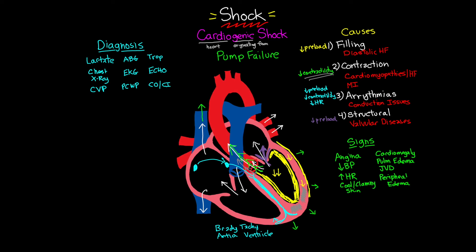Now let's talk about the various treatment modalities for cardiogenic shock. The first and most basic treatment is to ensure we are supplying adequate oxygen. Our perfusion is decreased and the shock state results from lack of oxygen delivery, so we want to ensure as much oxygen is available as possible. The next thing we want to look at is cardiovascular support. First we'll look to increase systemic vascular resistance, which is primarily done through our vasopressors.